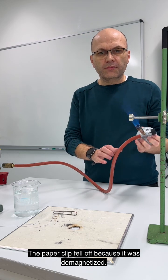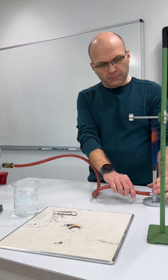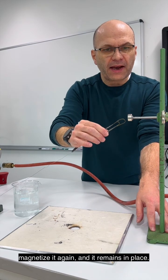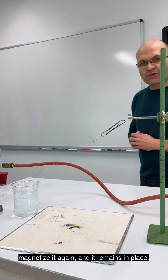The paperclip fell off because it was demagnetized. Let's cool it down and now we can magnetize it again and it remains in place.